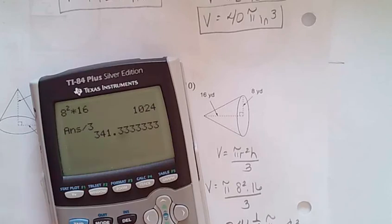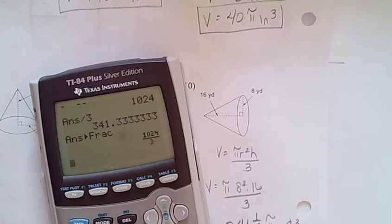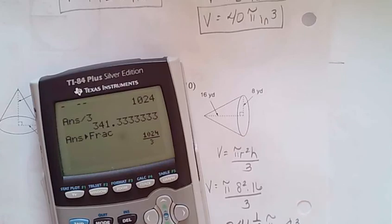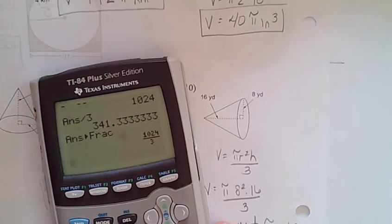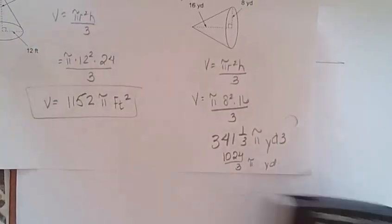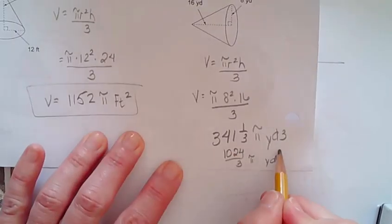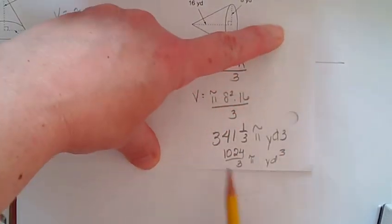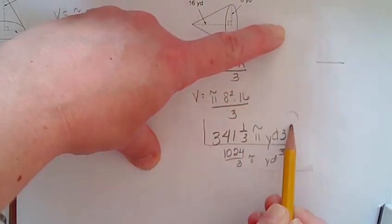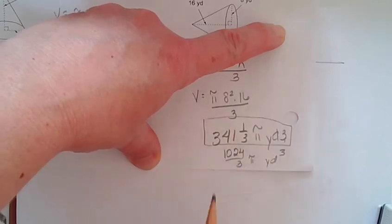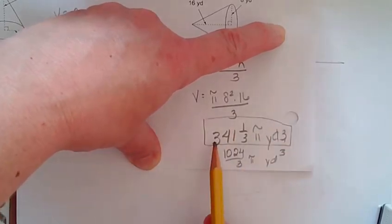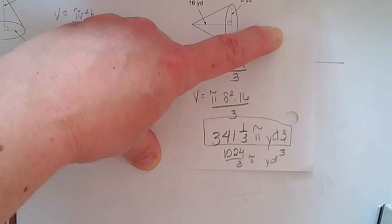We can also do math frac, turn it back, which I call math enter enter. And you could say that that is 1024 divided by 3 pi yards cubed. So we could do that, but honestly, this one, at least you know what it is. That should be a cubed. So 341 and a third pi.